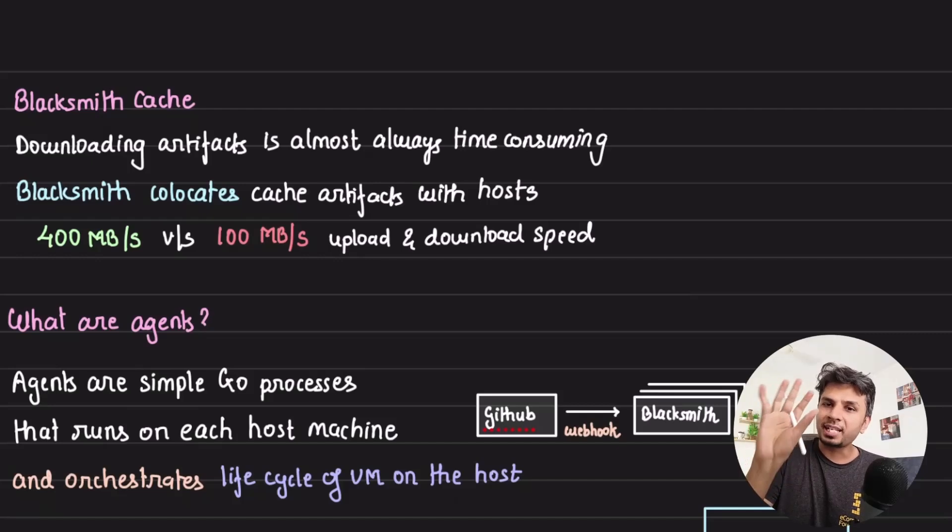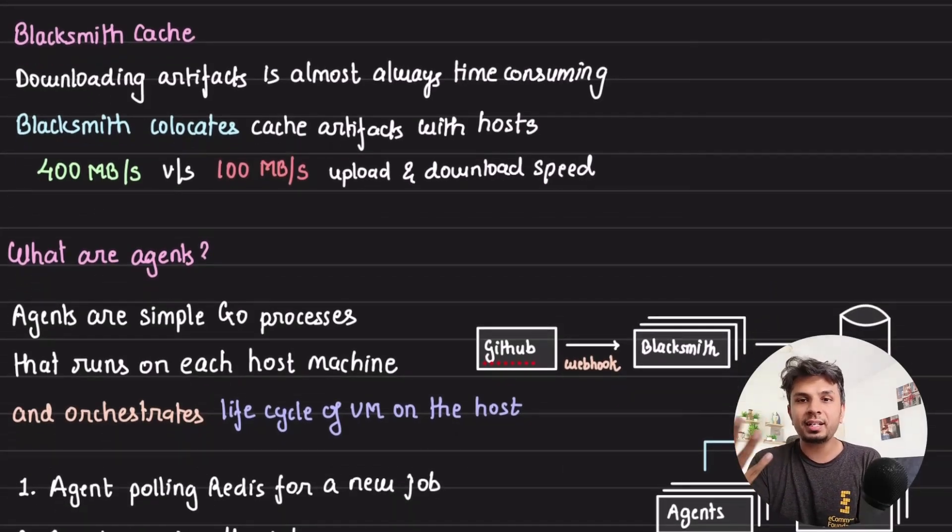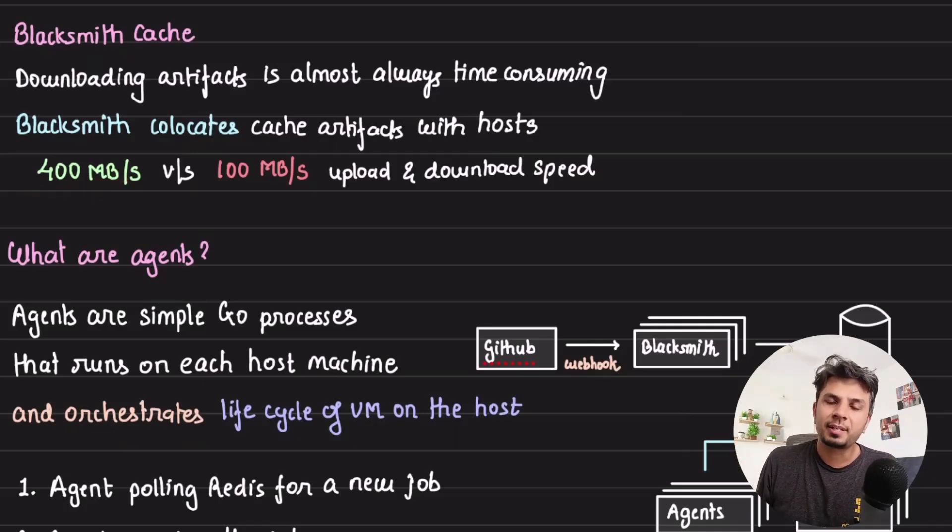Now, instead of that, Blacksmith co-locates this cache, cache artifacts on hosts itself. So it gives them a read write time or upload download time of 400 Mbps versus 100 Mbps that you would typically get on a regular GitHub runner.